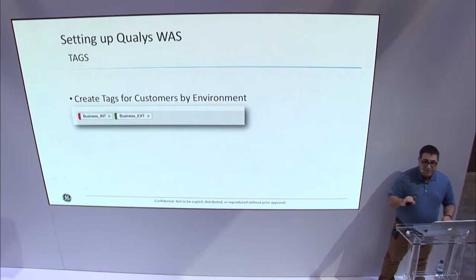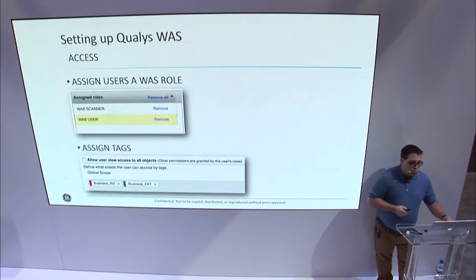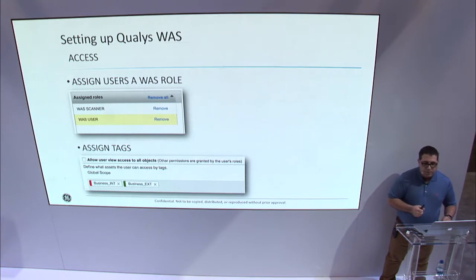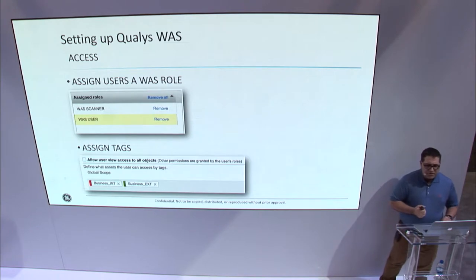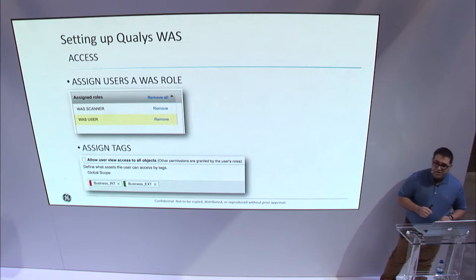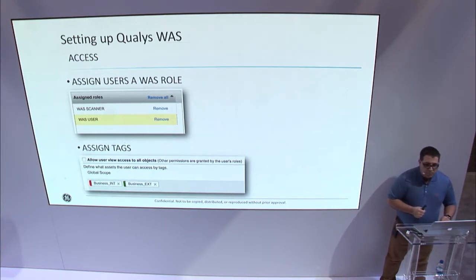For simplicity, we're going to focus on business plus an environment such as EXT for external and INT for internal applications. Once we have our tags created, we can begin importing our businesses and customers into Qualys. We've set up two different roles for our default WAAS user within the administration module, based off of the default user template and adjusted to limit access into Qualys as needed. The WAAS user role is set up to have read access and allow generating reports to applications that share the same tag.